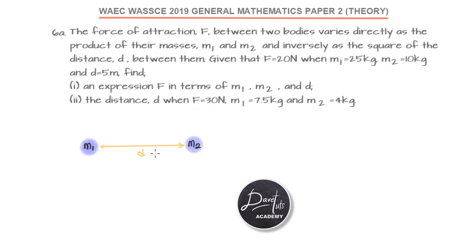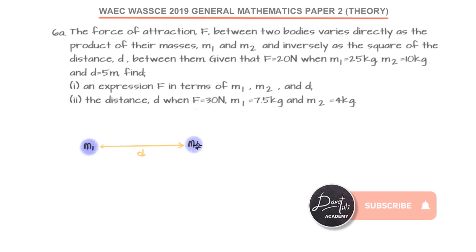This is a pictorial view of what we are being told: two bodies M1 and M2 are separated at a distance D and they have a force of attraction F between them. We are told that F varies directly as the product of their masses, M1 multiplied by M2, and inversely.